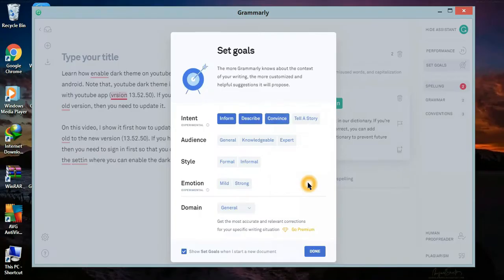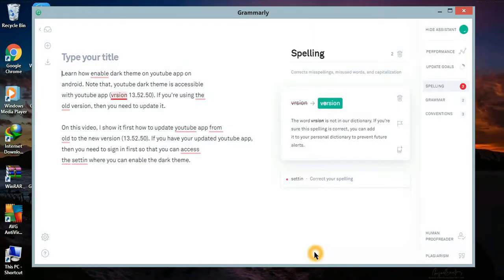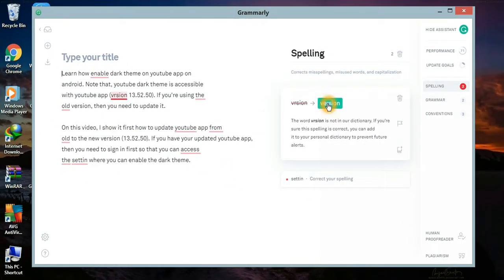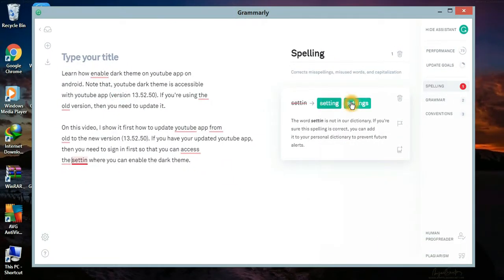Click done. As you can see, it corrects misspellings, misused words, and capitalization. The green button shows the correction for every mistake in your grammar and has an explanation below. I'll just click every green button that appears to correct my grammar.